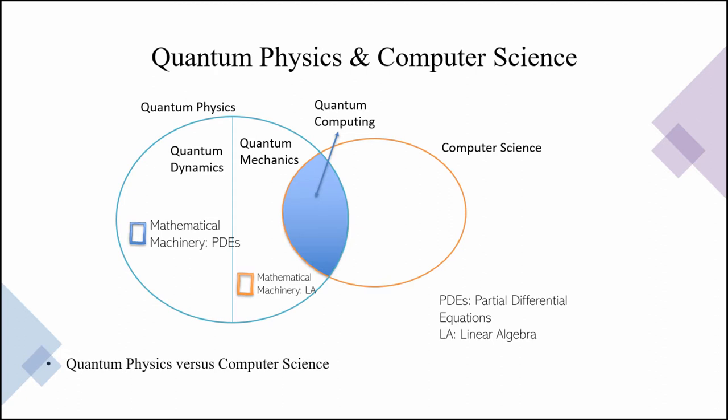So the mathematical machinery for quantum dynamics is partial differential equations, whereas the linear algebra would be more than enough to mathematically describe the quantum mechanics. Of course, it's based on different interpretations of what's observed in nature, but we will basically take one of these interpretations and then move forward. So quantum computing is an intersection of these two fields, computer science and quantum mechanics, so we need a little bit from both of these fields to move forward.